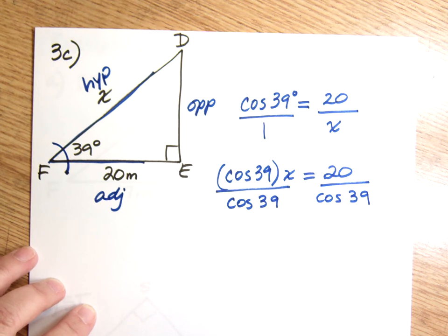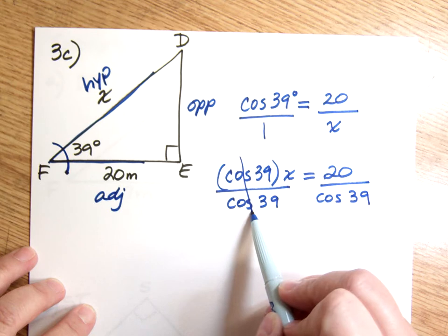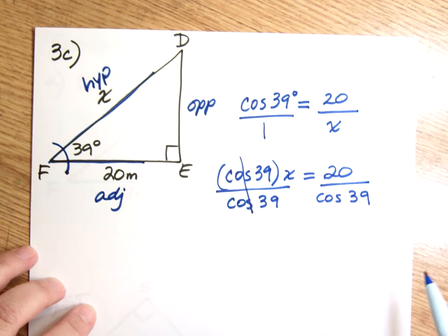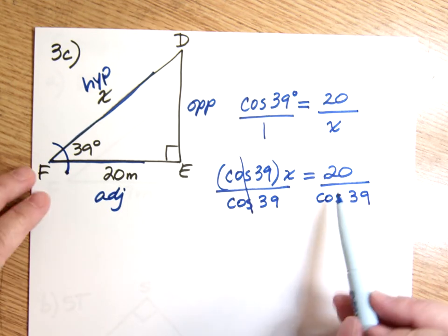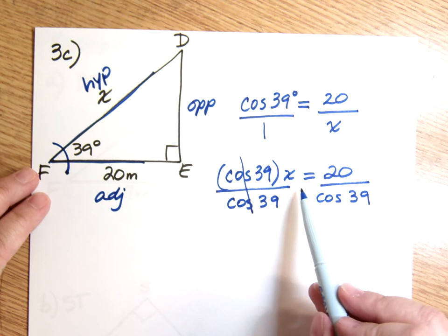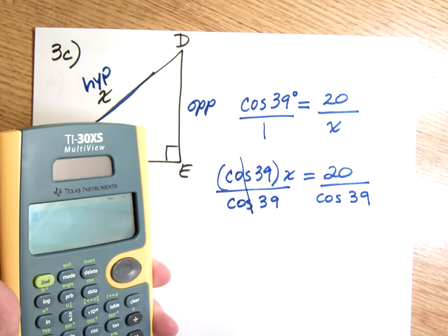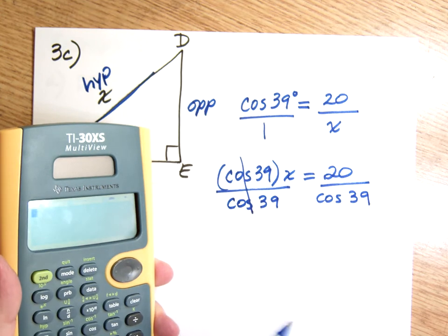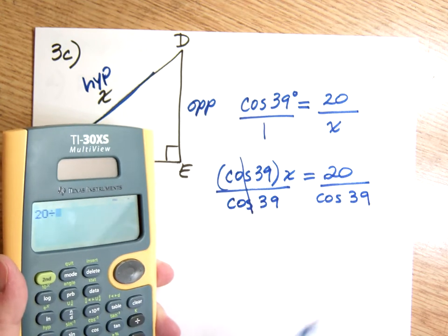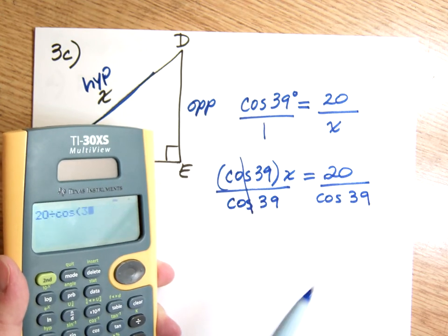There we go. Okay. So now I can cross this out, because I've canceled it. I've divided cosine 39 by cosine 39. That makes it 1. And now is X alone? The answer is yes. So that means it's time to pull out my calculator. When X is alone, it's equal to whatever I have on the opposite side. So I'm going to do that. I'm going to do 20 divided by cosine 39.